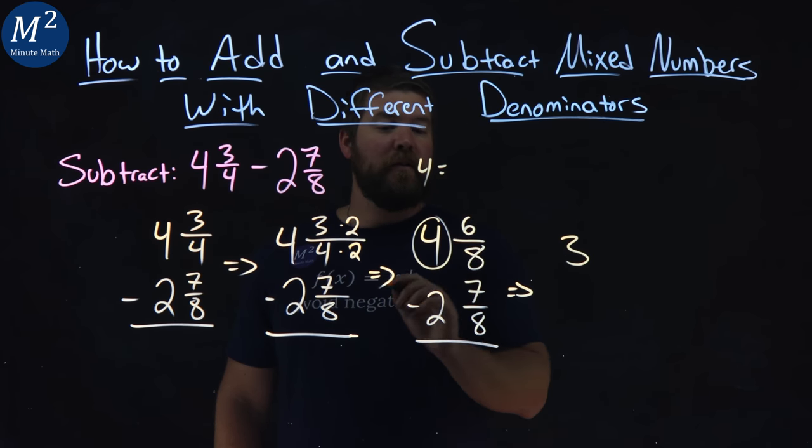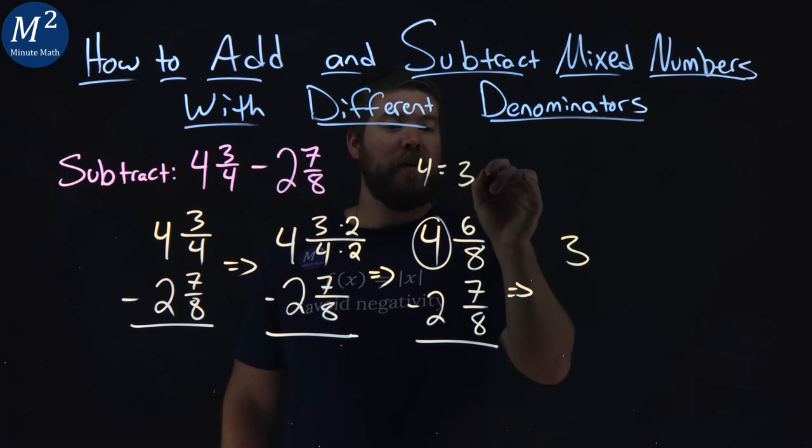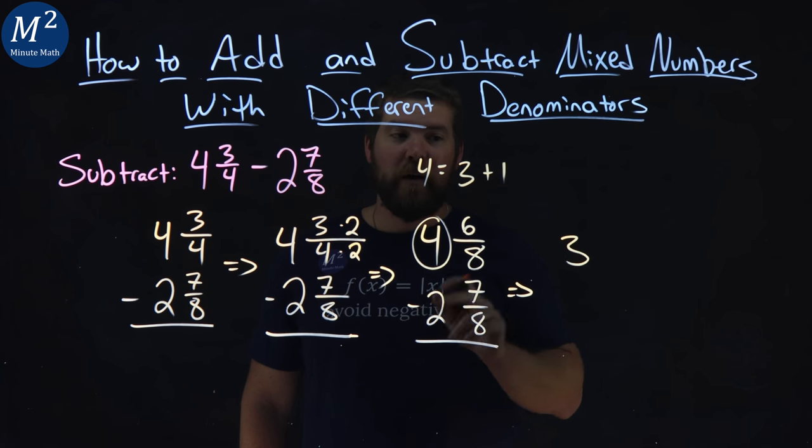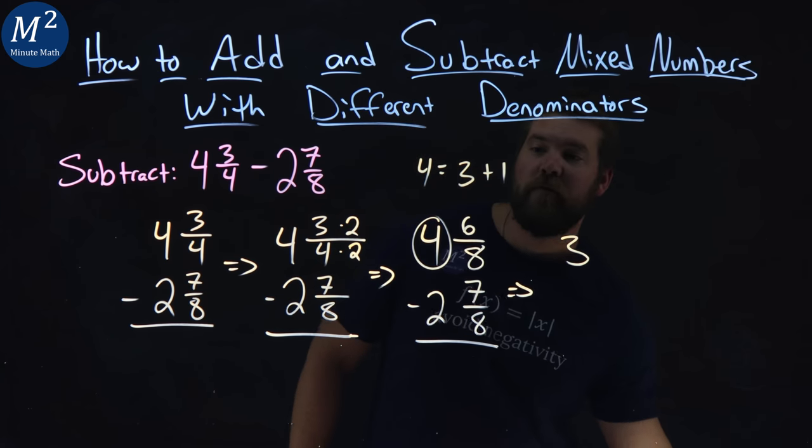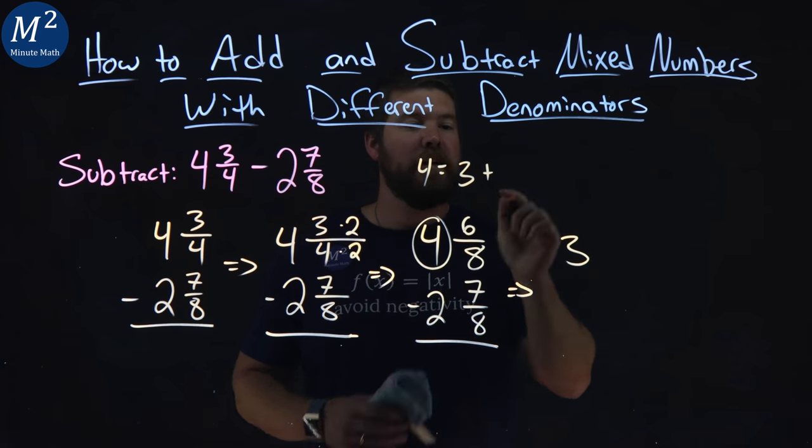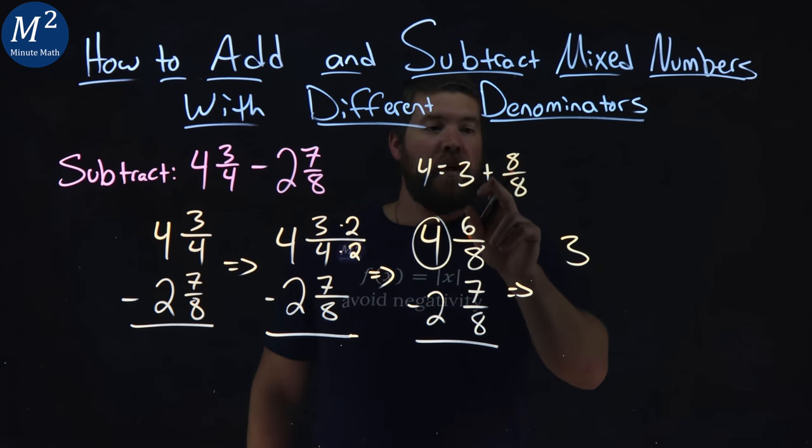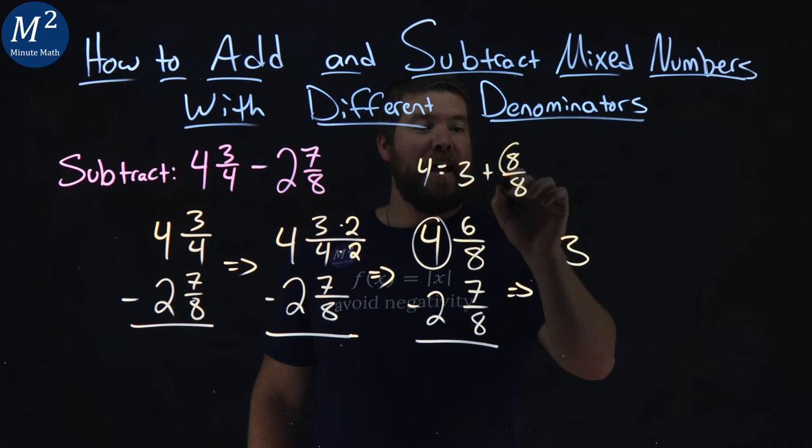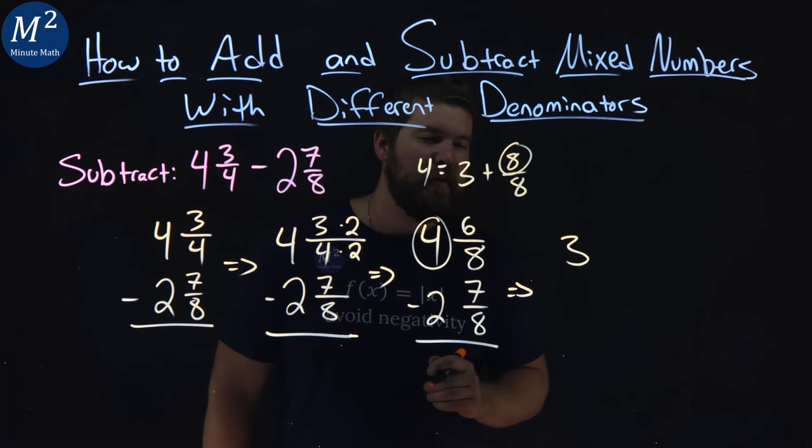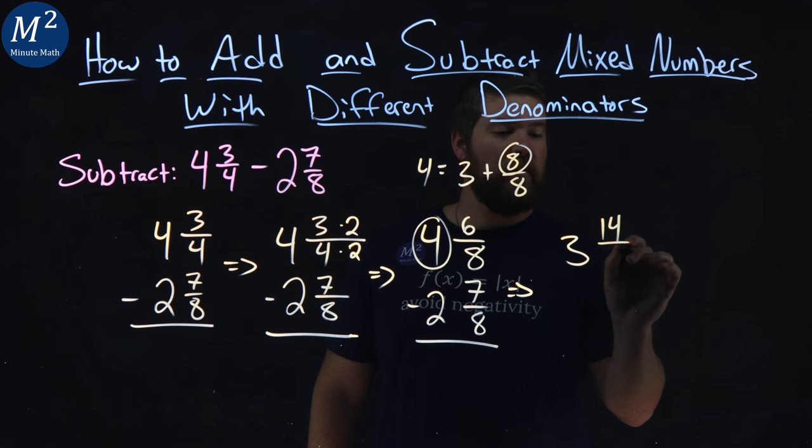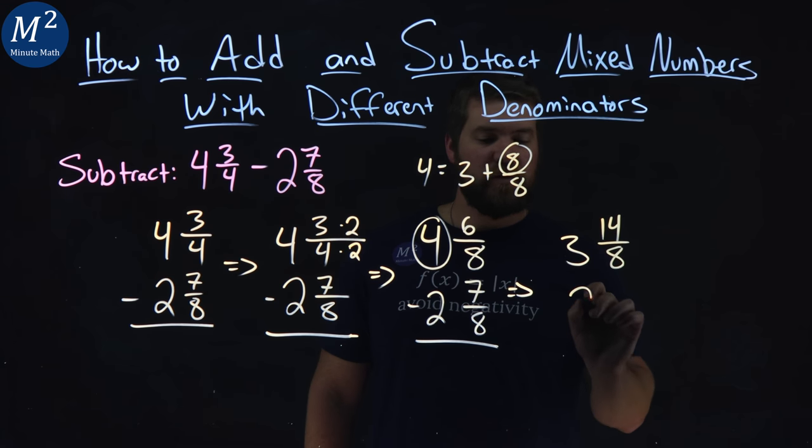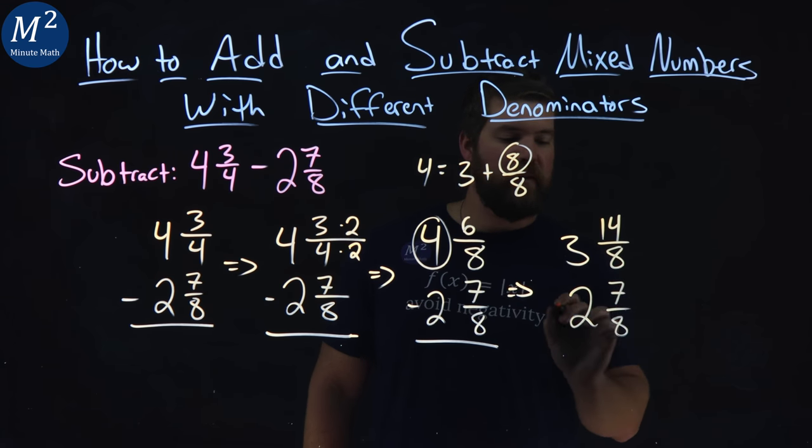Remember, 4 is equal to 3 plus 1, right? That 1, if we put that as a fraction, is 8 over 8. So we're going to take the 6, add 8 to that 6, and that comes out to be 14. So we have 3 and 14 over 8 minus 2 and 7 eighths.